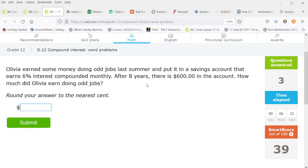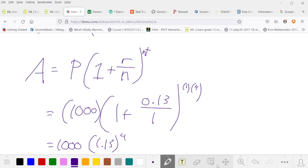Now Olivia earned some money doing odd jobs last summer and put it in a savings account that earned 6% compounded monthly. After eight years, there is 6,000 in the account. How much did Olivia earn doing odd jobs? So this is a different setup. After eight years, we know there's 600. So we know the interest rate. We know it's compounded monthly. We're going to have to rearrange the formula, which now is not provided.